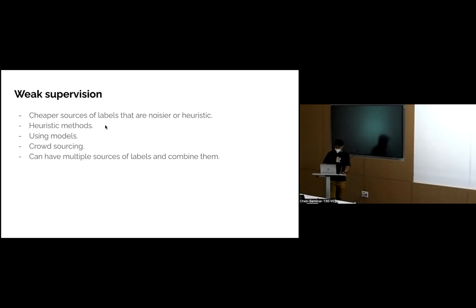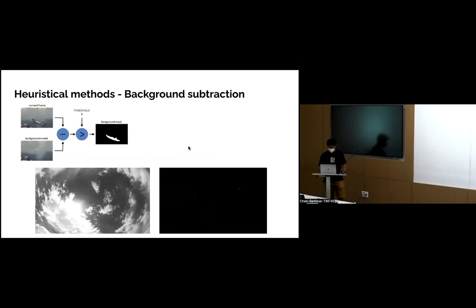There are different ways of doing this. Most of the 'games' involve heuristic methods — specific hacks for your data that only work for your data — to get labels. One such method is background suppression. This first picture from the OpenCV website shows what background suppression is: it takes two frames, does pixel-to-pixel subtraction, and anything above a threshold becomes a white pixel while everything else is black, creating a mask.